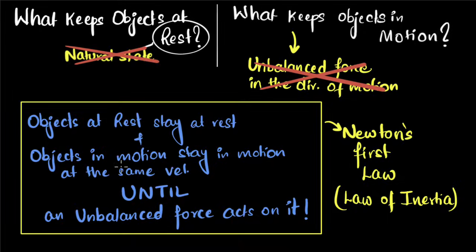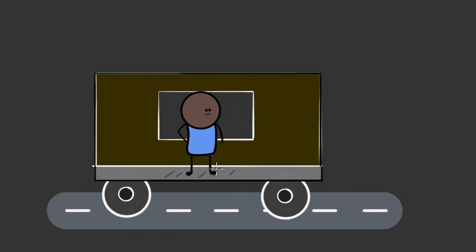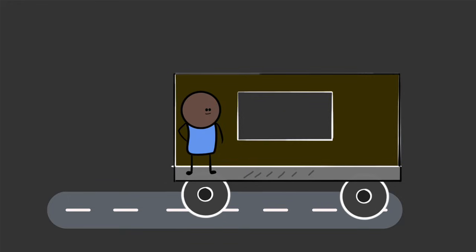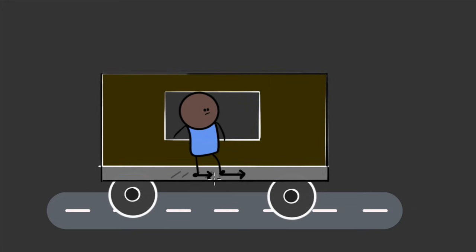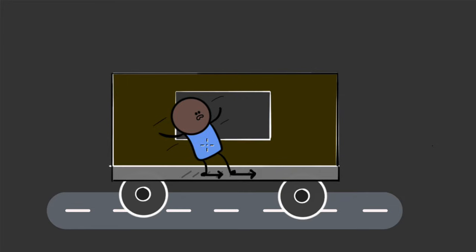Now we're ready to answer the question from the beginning of the video. When you're at rest in the bus, because of your inertia, you have a tendency to continue that state of rest. So if the bus accelerates, the floor of the bus tries to slide past you, but friction doesn't allow that. Friction acts on your feet and accelerates them forward. But the rest of your body, because of its inertia, continues to stay at rest — and that's why you fall back. Not because somebody is pushing you backwards, but because your feet are being pulled forward.